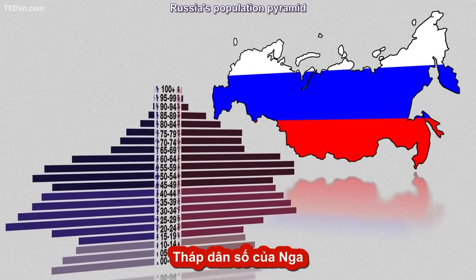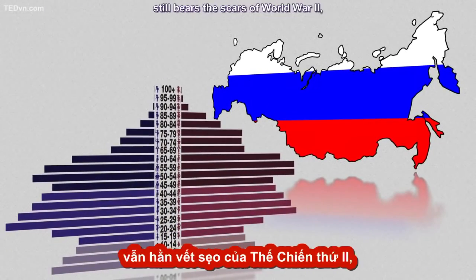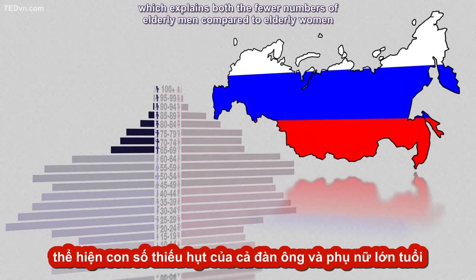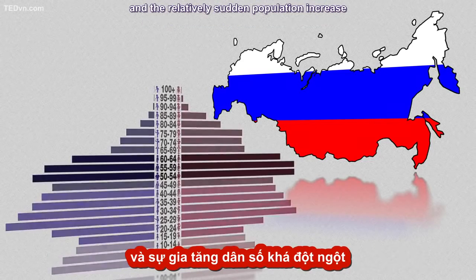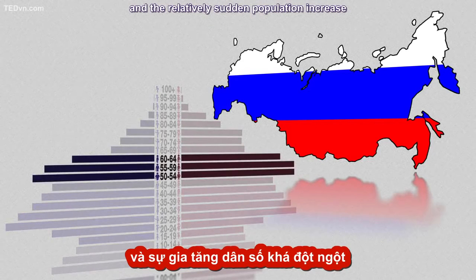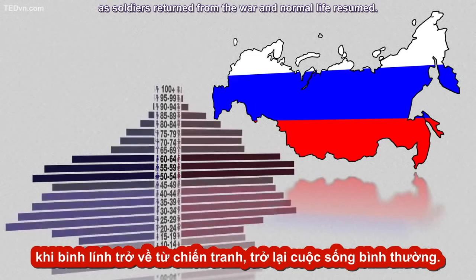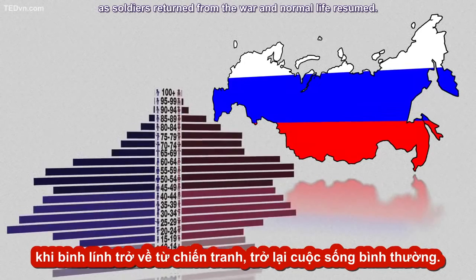Russia's population pyramid still bears the scars of World War II, which explains both the fewer numbers of elderly men compared to elderly women, and the relatively sudden population increase as soldiers returned from the war and normal life resumed.